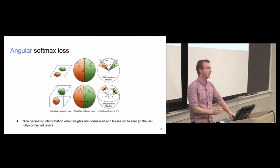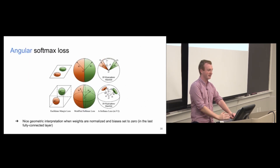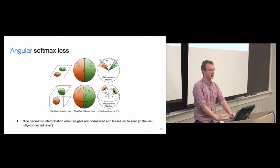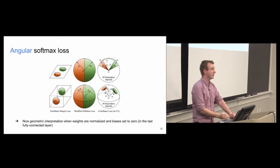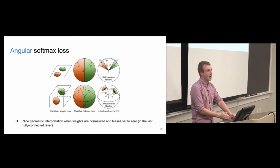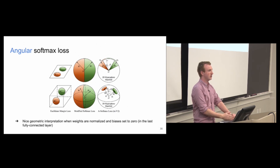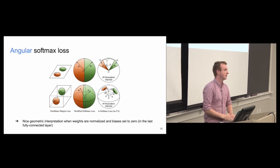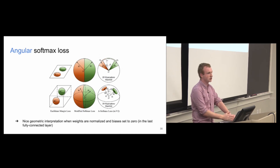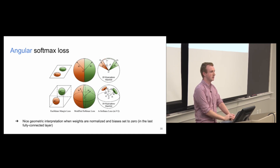I would highly recommend going and trying to implement Angular Softmax loss. Another benefit is that you get to use it during the classification phase, which is much more information-rich. You can use this straight off the bat — it's not necessarily a fine-tuning technique. It's sort of one and done: you don't need the complexity of sample mining, and you don't need to do classification training first and then fine-tune. Just use this.